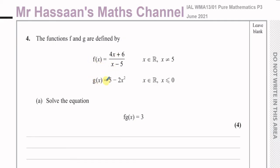g(x) is defined as 5 − 2x² for values of x which are all the real numbers. However, this domain has been restricted to all values of x which are less than or equal to 0.